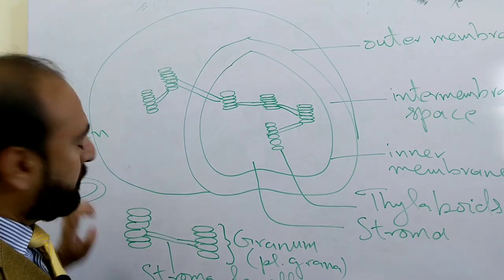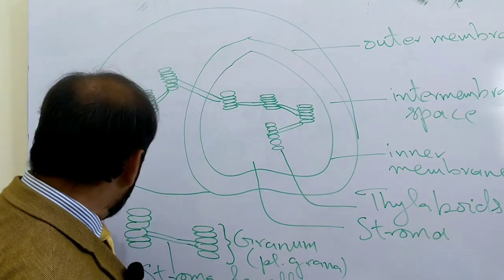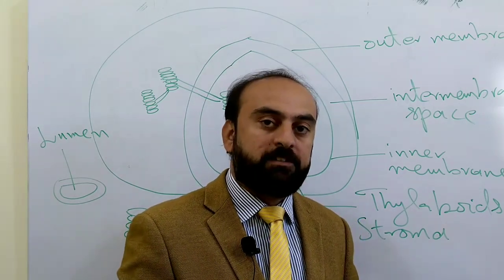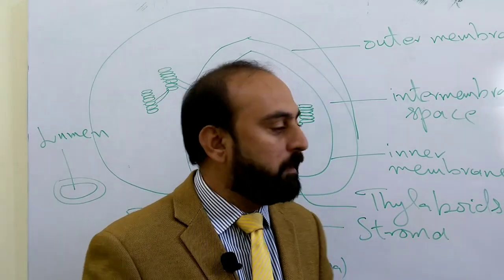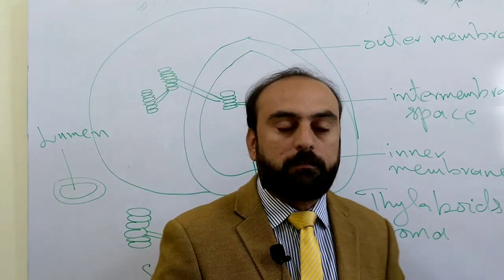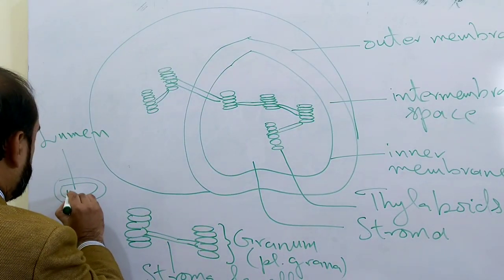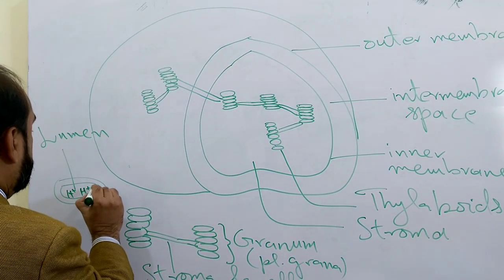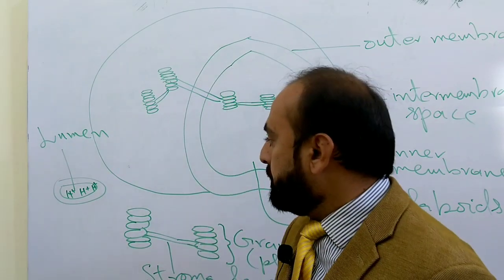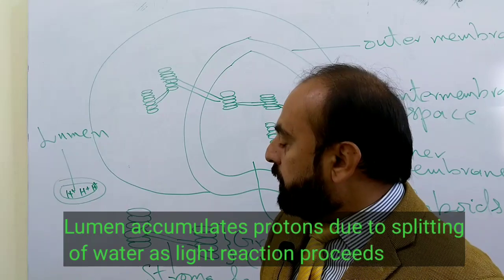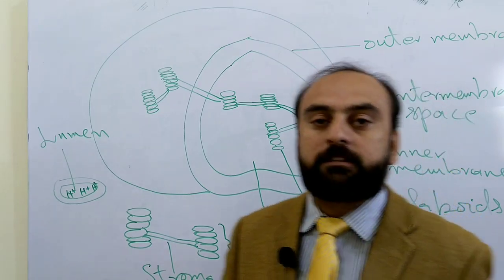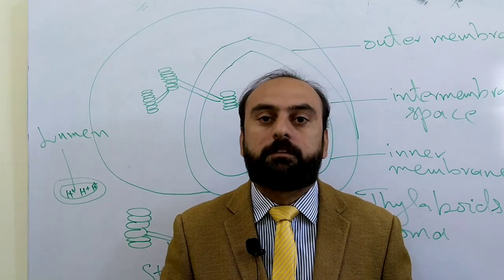The lumen is a highly important region because on this side the oxygen-evolving complex is located, which breaks down water into electrons, protons, and oxygen. Moreover, this lumen is impermeable to protons, so it does not allow the escape of protons by itself. Due to this property there is an accumulation of protons which can be moved to the stroma side only with the help of a complex called ATP synthase, which allows the synthesis of ATP.